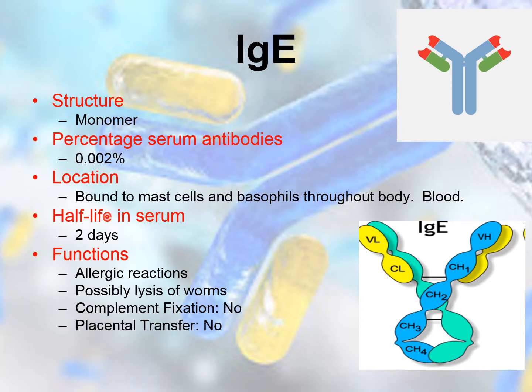IgE has a half-life of two days in serum. They are the major antibodies involved in allergic responses and possibly in the lysis of worms and immunity to parasites. They are not involved in any complement fixation pathway and do not cross the placenta.